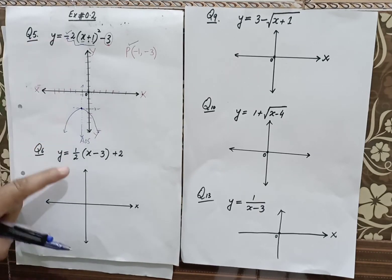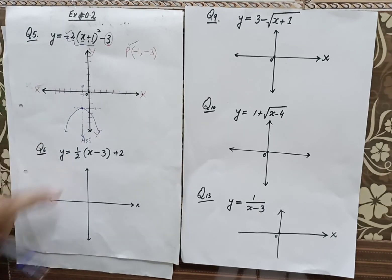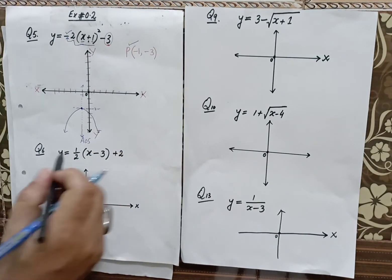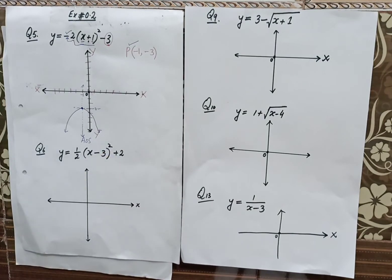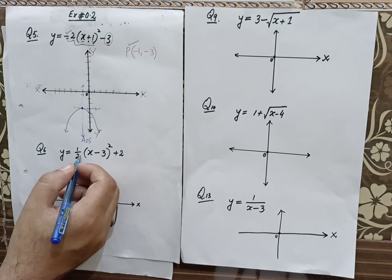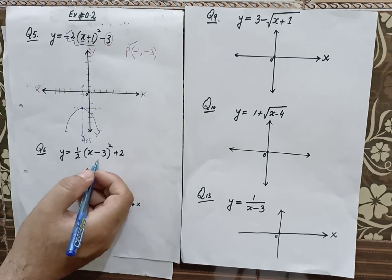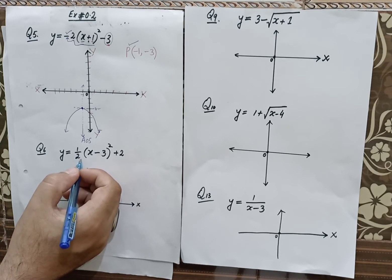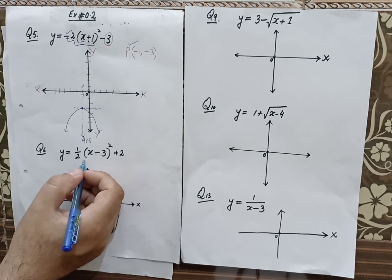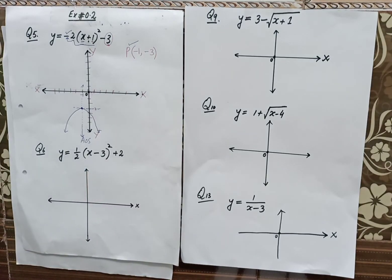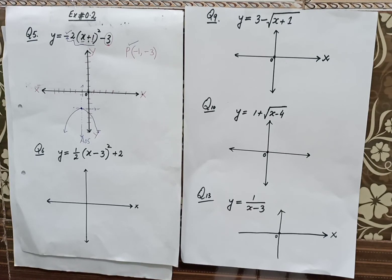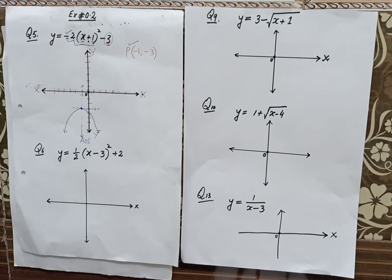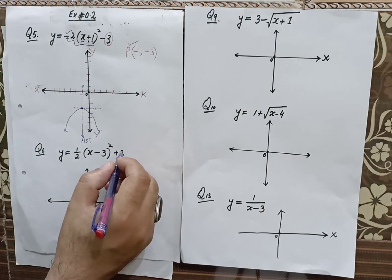Let's come to the next one — question number 6. Here we have one upon two times (x minus 3) whole square plus 2. So the coefficient is one upon two, which is positive. The shape of the parabola is different here. One upon two is the coefficient, so the parabola is wider.